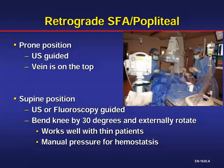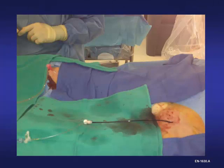We like to use retrograde access to cross the lesion, then use antegrade to actually treat. We cross the lesion, externalize the wire, and treat from the top. For supine positioning, it's very difficult with ultrasound. What we typically do is rotate the leg 30 degrees externally and flex the knee in a frog position, then place the fluoroscopy and position the image intensifier on the contralateral side — 30 degrees contralateral to the leg we're trying to access.